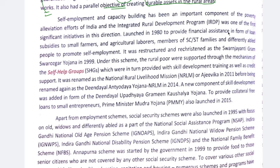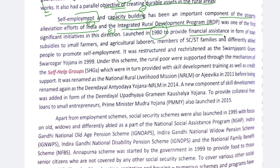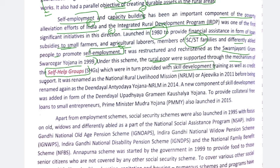Self-employment and capacity building has been an important component of India's poverty elevation efforts. The Integrated Rural Development Program (IRDP), launched in 1980, was a significant initiative providing financial assistance in the form of loans and subsidies to small farmers, agriculture laborers, SC/ST family members, and differently-abled people to promote self-employment. This program was later restructured as Swarna Jayanti Grameen Swarozgaar Yojana in 1999, which supported rural poor through self-help groups, providing skill development training and credit support.